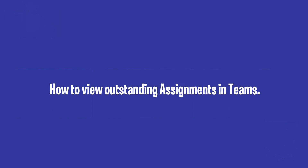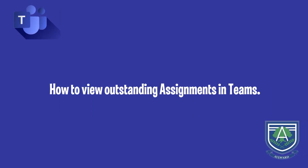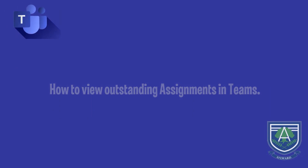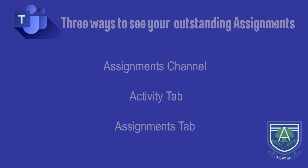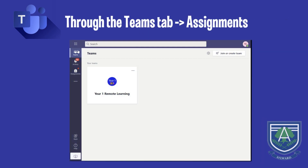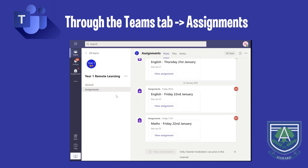How do you know if you have been set an assignment in Teams? There are three ways to see if you have any outstanding assignments to complete. The first way is by going into the Teams tab. You can select the Assignments channel, which displays all assignments teachers have set.